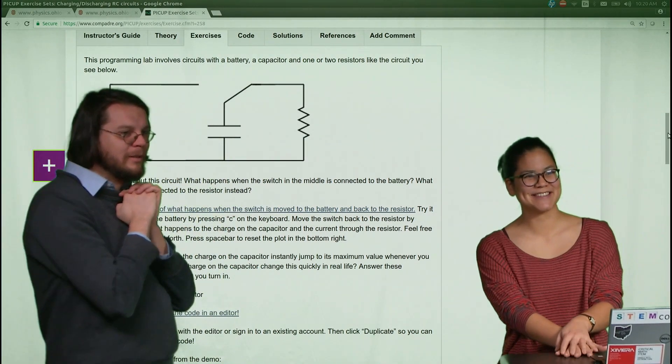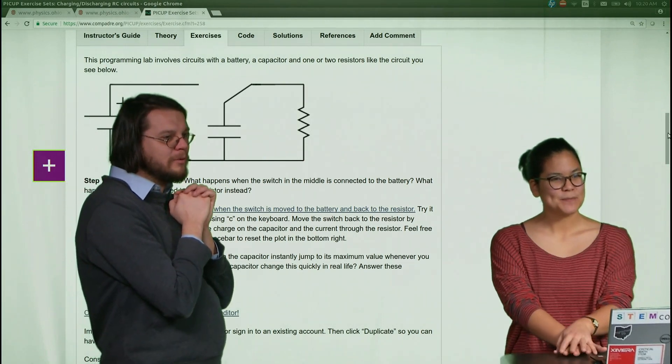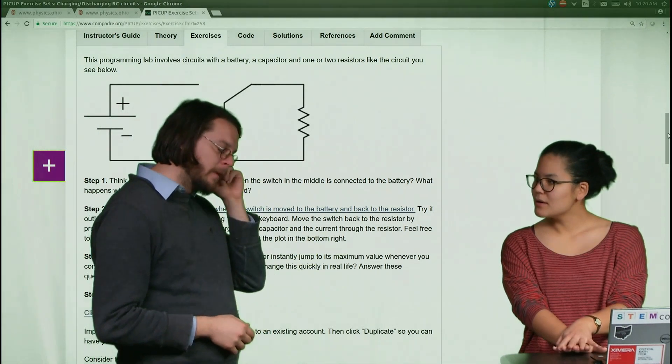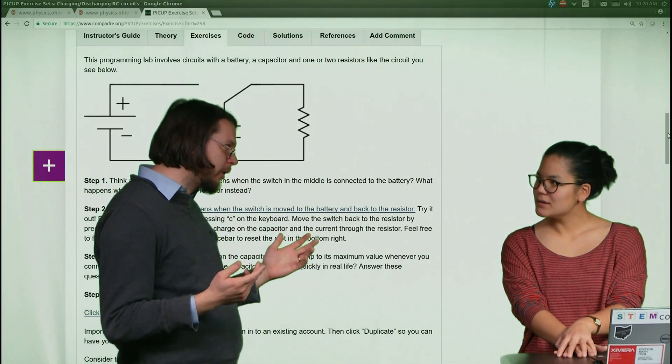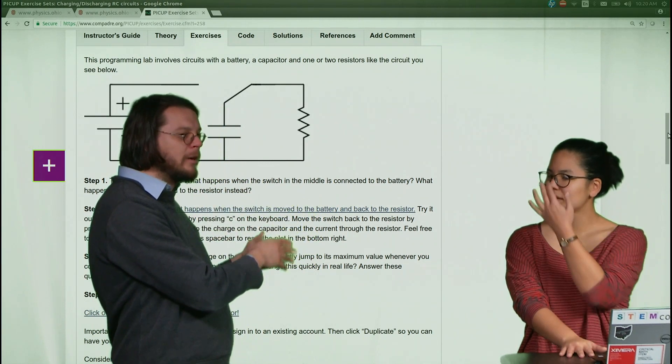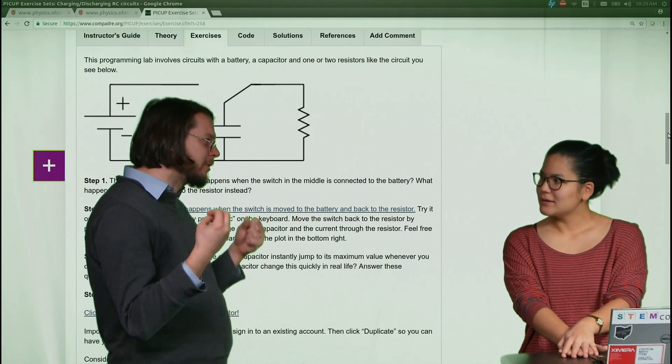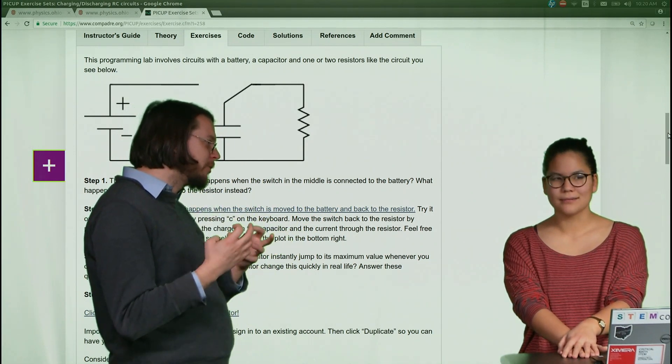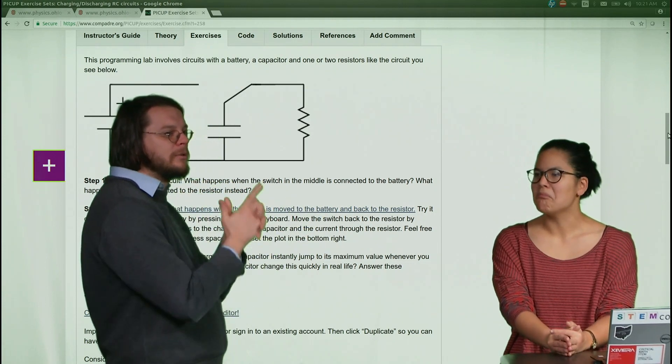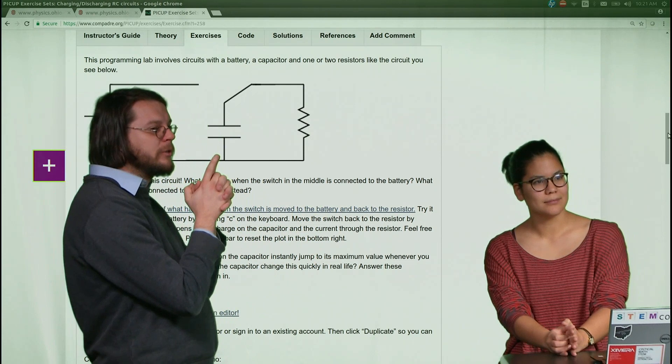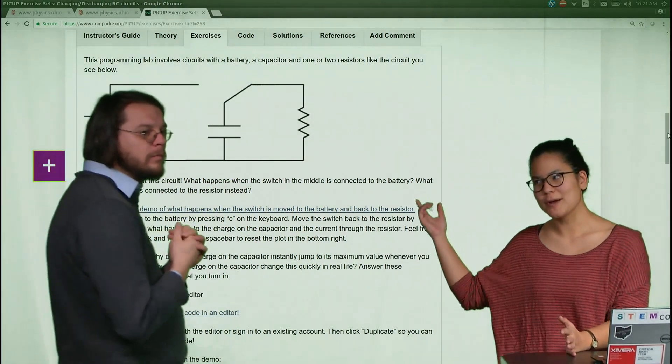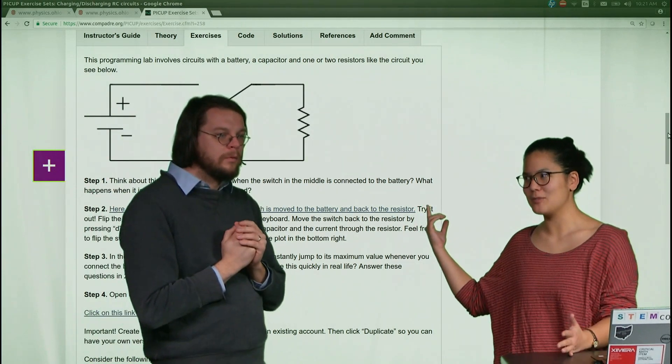In principle you can charge up a capacitor. Porsche is making this electric car and not only does it have a regular electric car battery, lithium-ion, it also has a capacitor bank so you can have this burst of speed. They charge up all those capacitors and then when you need it, it gets discharged.